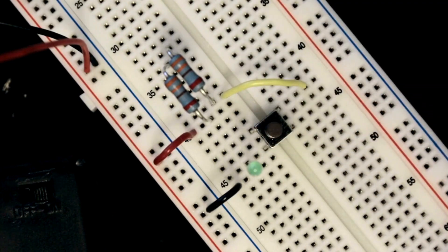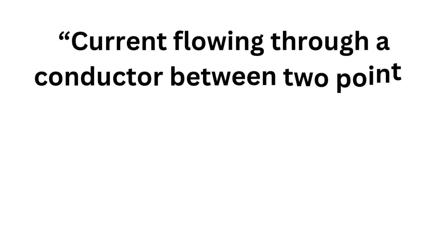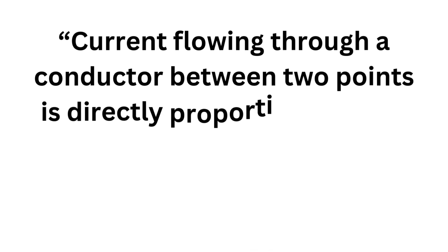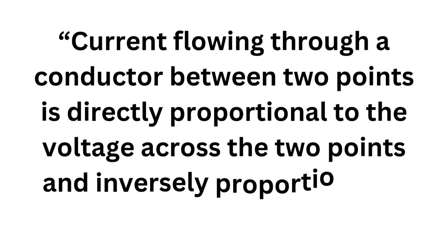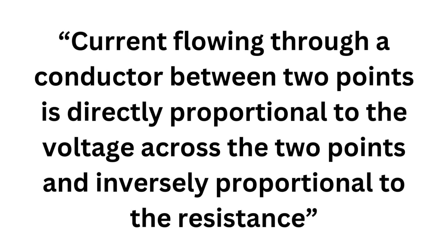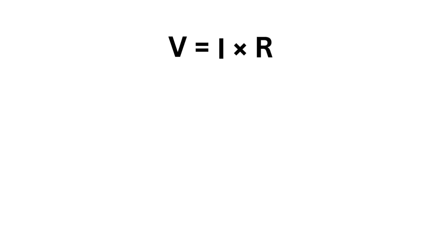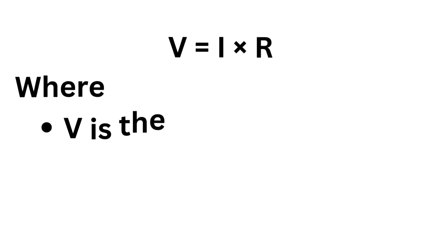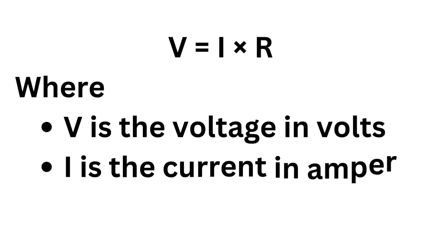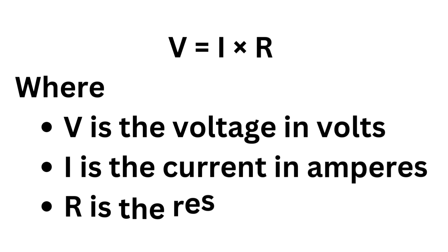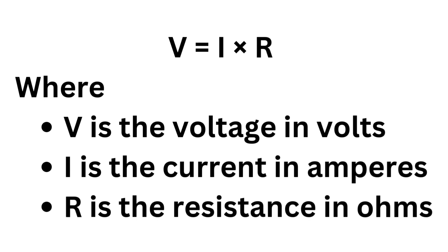Ohm's Law states that the current flowing through a conductor between two points is directly proportional to the voltage across the two points and inversely proportional to the resistance. In simple terms, it can be expressed as V = IR, where V is the voltage in volts, I is the current in amperes, and R is the resistance in ohms.